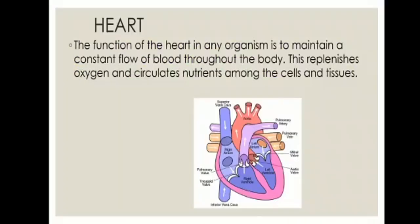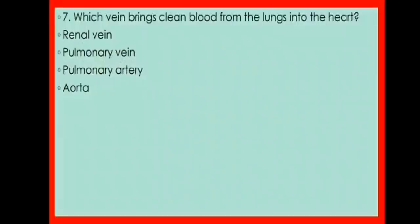Human heart: the function of the heart in any organism is to maintain a constant flow of blood throughout the body, replenishing oxygen and circulating nutrients among cells and tissues. Seventh question: Which vein brings clean blood from the lungs into the heart — is it the renal vein, pulmonary vein, pulmonary artery, or aorta? The pulmonary vein brings clean blood from the lungs into the heart.